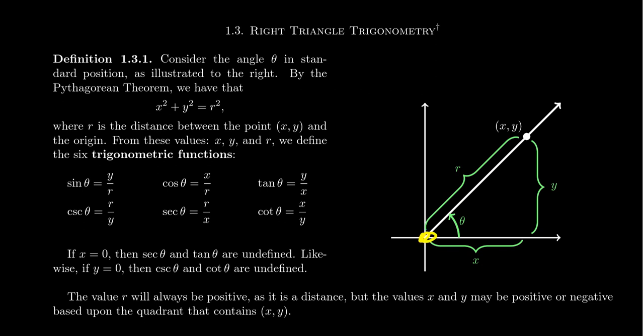The origin is off-limits. You're going to pick some point on the terminal side, and arbitrarily we'll call this point (x, y). It doesn't matter which point you choose — the trigonometric functions will be based upon ratios. So choosing different points on the ray, so long as it's not (0, 0), will give you the same ratio when put into simplest terms. They'll all be proportional to each other.